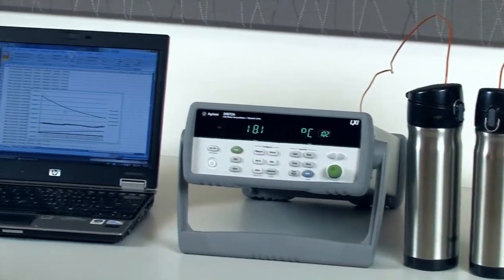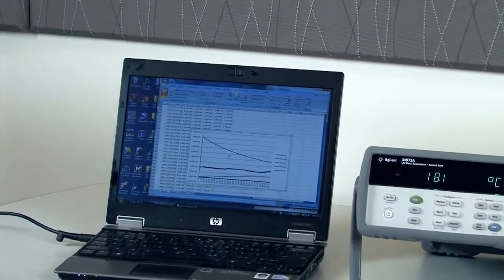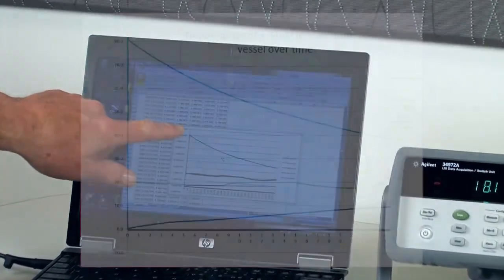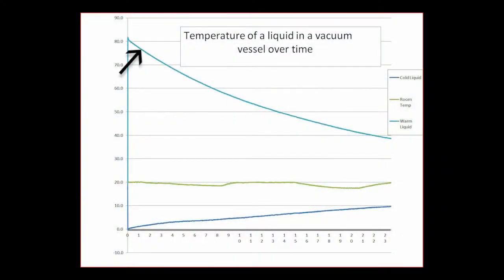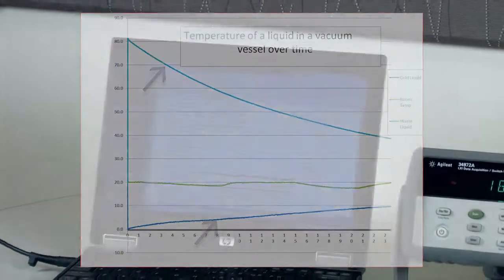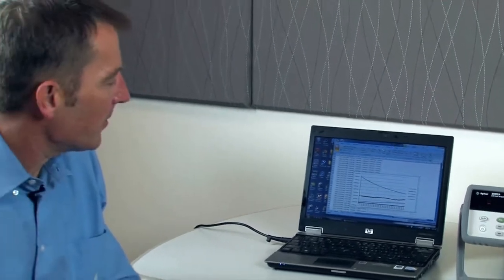I used our BenchLink data logger software to make the measurements over a 24-hour period. After four hours, the hot liquid had lost about 10 degrees, and after eight hours, the cold liquid had only gained about two degrees. Over the 24-hour period, the hot liquid remained hot and the cold liquid remained cold.